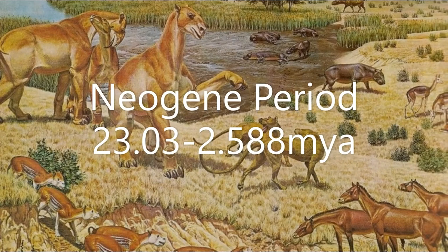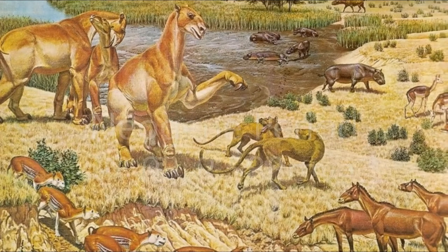After was the Neogene Period, from 23.03 to 2.588 million years ago. In this period, creatures evolved and became more related to each other than to those of the previous period. Species also interchanged continents — as near the end, North America and South America had joined, and in previous periods, Africa and India joined Asia.